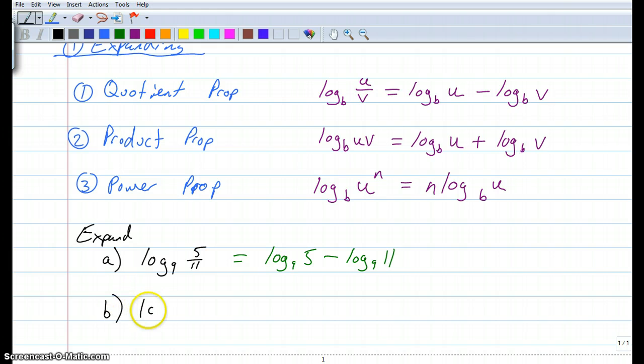Let's try another one. How about the log base 9 of 55? Well, there's nothing being divided or multiplied and there's no exponents, so we're all done. Well, yeah, but there's another way that we can write 55. Another way to write 55 is 5 times 11. So therefore, now we've got 5 times 11, we're going to use the product property. This is log base 9 of 5 plus log base 9 of 11. There it is.